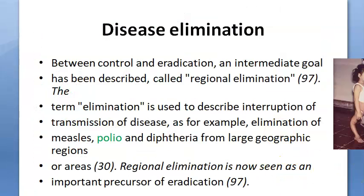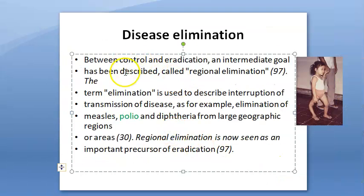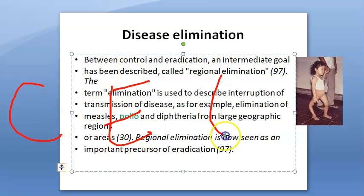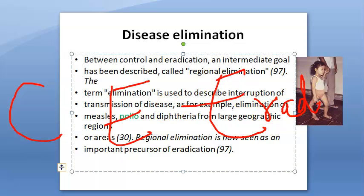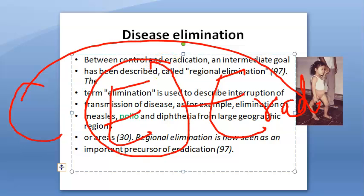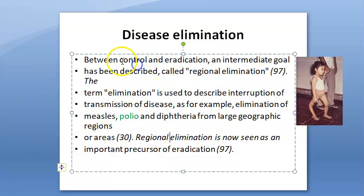Now let's move on to disease elimination. Between control and eradication, an intermediate goal has been described as regional elimination. So first you have control, then elimination, then you can talk about eradication. Between control and eradication, elimination sits in the middle — that is what the textbook says.